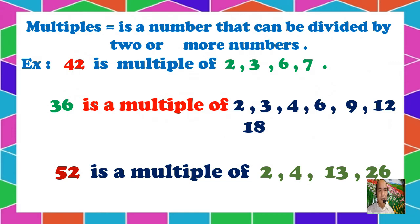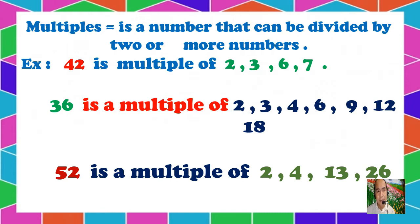We have multiples. What does the word multiples mean? Multiples is a number that can be divided by 2 or more numbers. A number which is divisible by 2 or more numbers is what we call multiples.